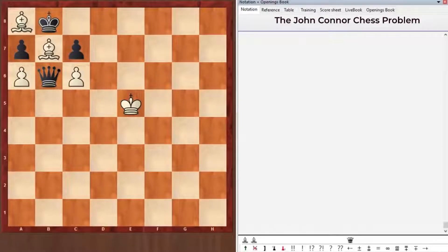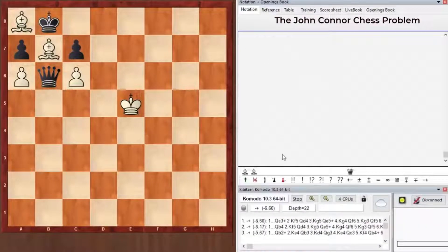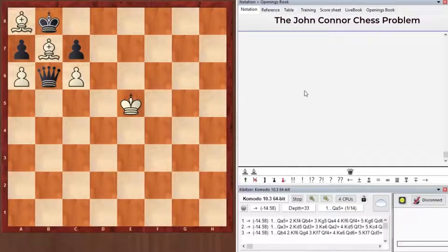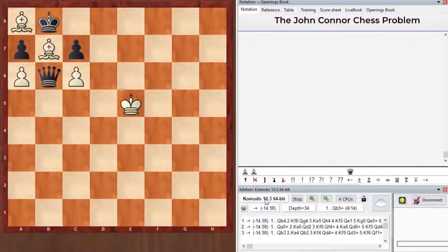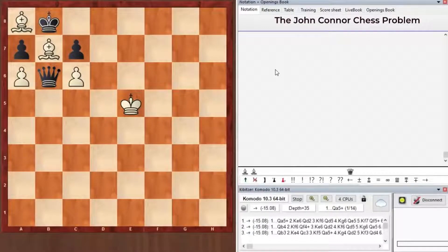Here it is Black's move, and they, strange as it may seem, should try to win. Let's see what, say, Komodo has to show. Here, look, minus 14.58. All three first lines.